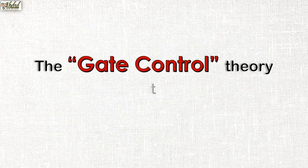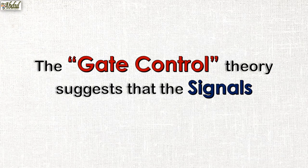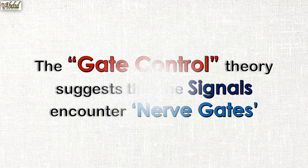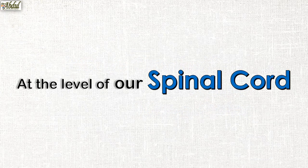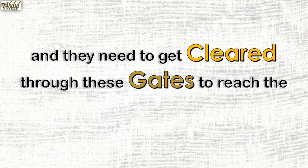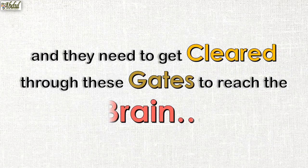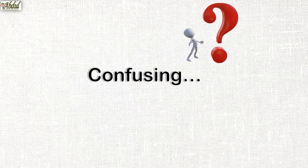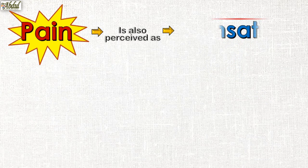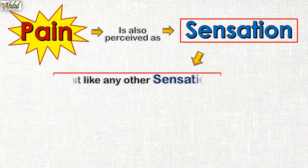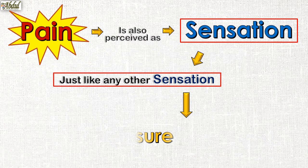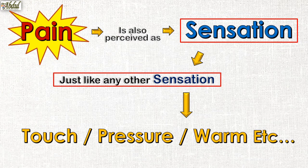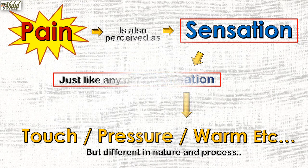The gate control theory suggests that signals encounter nerve gates at the level of our spinal cord, and they need to get cleared through these gates to reach the brain. Pain is also perceived as a sensation, just like any other sensation such as touch, pressure, or warmth, but different in nature and processing at the brain.